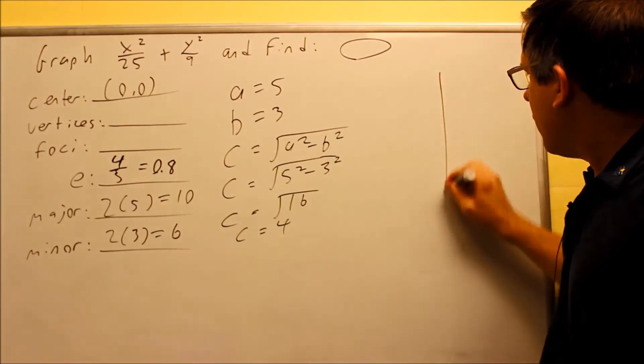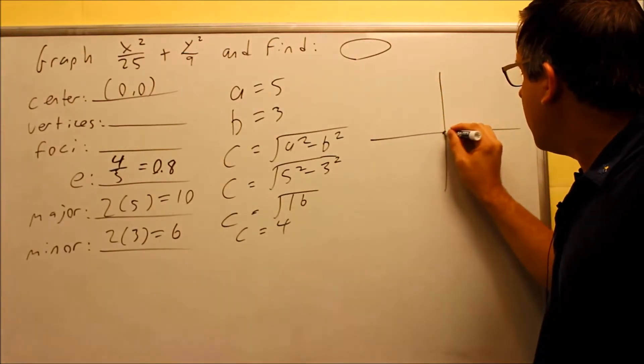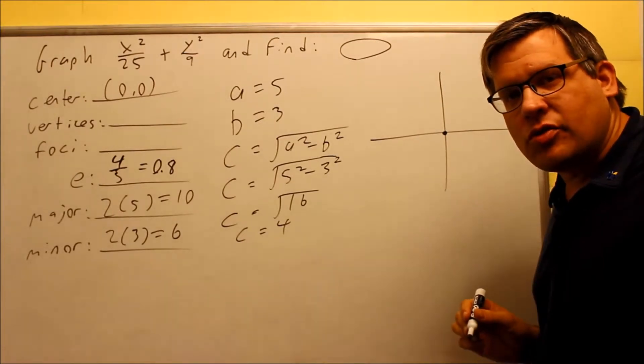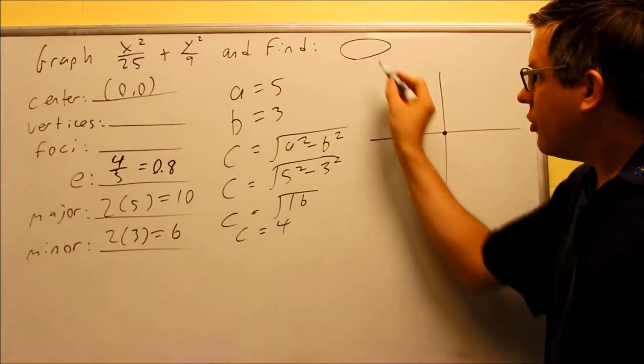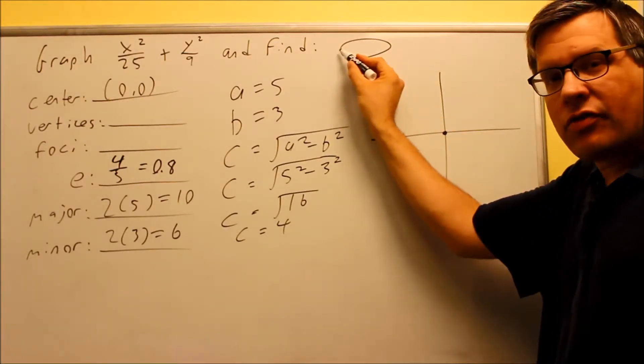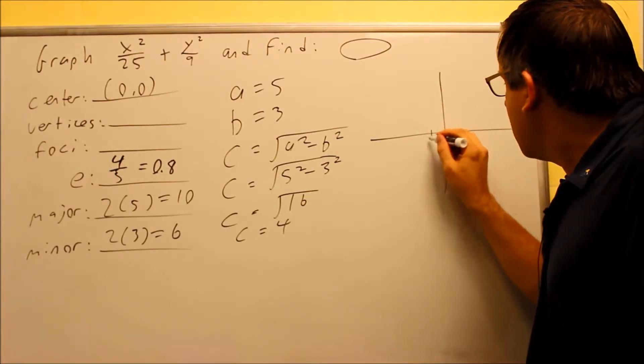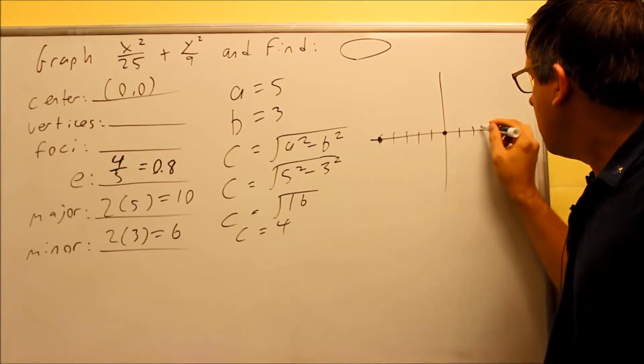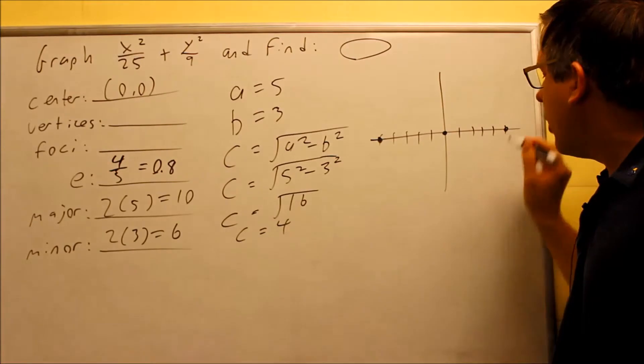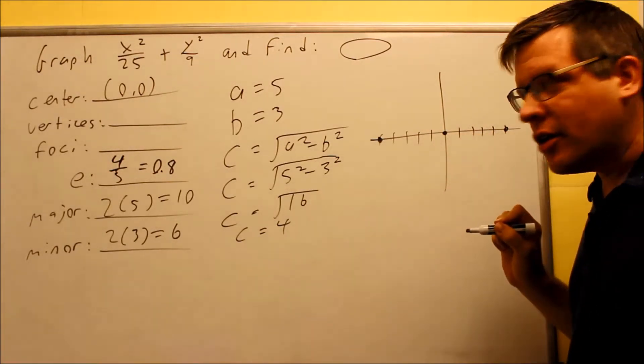So first, we begin by plotting the center. The center is at 0, 0. The a value is 5. You're always going to go in the direction that it opens up. So if you're here, 5 goes to the left and 5 goes to the right, so we're going to do that. We go 5 this way and make a dot. We go 5 that way and make a dot. It's 5 in each direction because that's the a value.